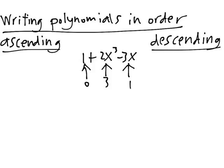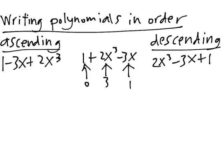Now, we can write this in ascending order as 1 minus 3x plus 2x cubed. So, we can write it in descending order as 2x cubed minus 3x plus 1.